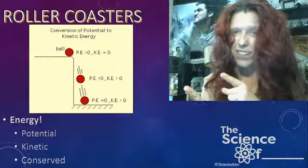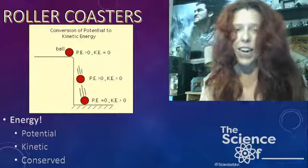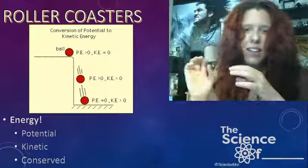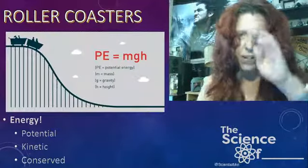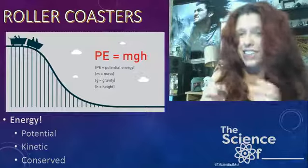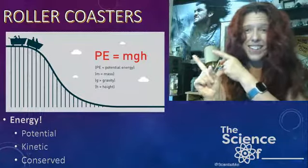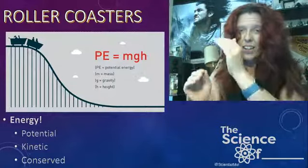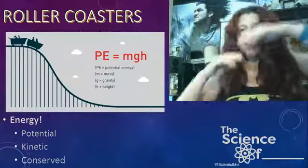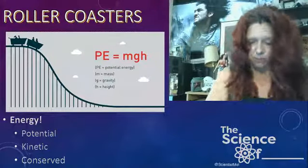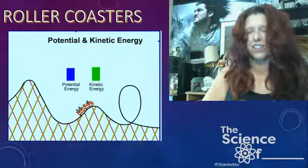Once the ball starts falling, it converts from potential energy to kinetic energy. When the ball meets the ground and starts rolling, the potential energy is zero and kinetic energy takes over. Potential energy is related to mass, gravity, and height. If we're looking at a roller coaster, the cars at the top of a hill have potential energy. Once gravity takes over, depending on the mass of the cars and how high it is, the potential energy is converted into kinetic energy — the actual movement of the cars.